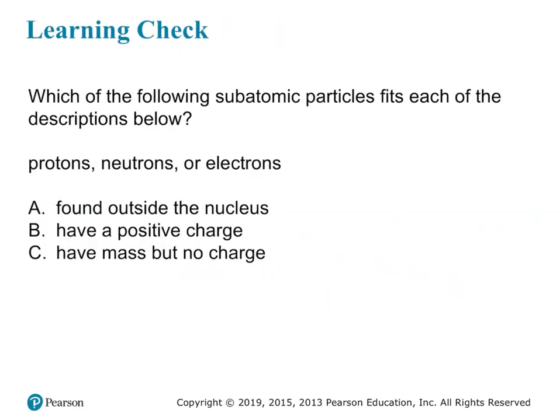Let's do a learning check. Which subatomic particle is found outside the nucleus? The electron. Which subatomic particle has a positive charge? The proton. And which subatomic particle has mass but no charge? The neutron.